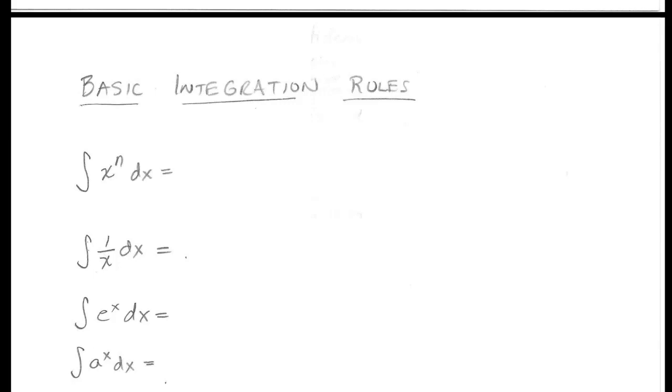So now let's consider some basic integration rules. Just like we had differentiation rules and basic differentiation rules, we're going to have some basic integration rules. And what these do is they reverse the differentiation. So that's how we're going to reason that they make sense, by checking whether differentiation of our result works to give us back what was in the integral.